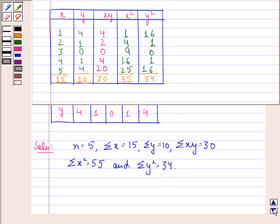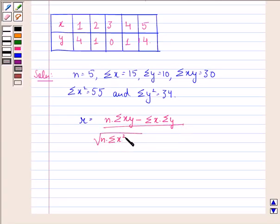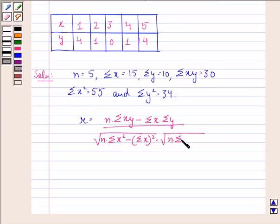Now we know that the correlation coefficient equals n times summation xy minus summation x times summation y, the whole divided by square root of n times summation x square minus summation x whole squared, multiplied by square root of n times summation y square minus summation y whole squared.